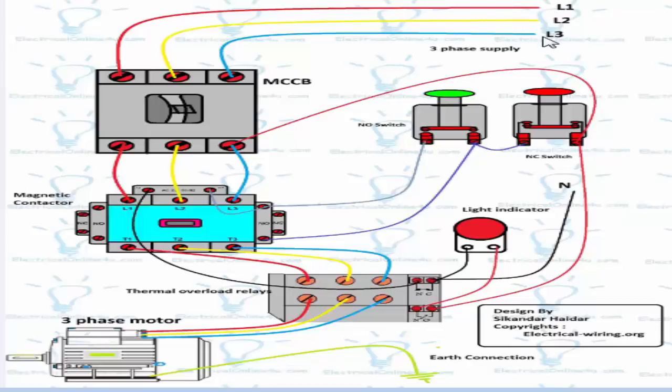Here I shown the three phase incoming supply which is connected to the molded case circuit breaker or the MCCB circuit breaker, and from the MCCB circuit breaker this supply goes to the contactor main contacts L1, L2, and L3.